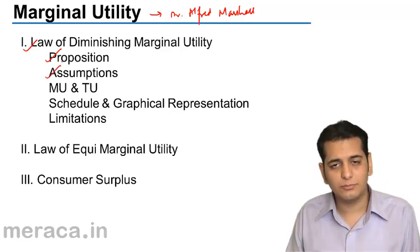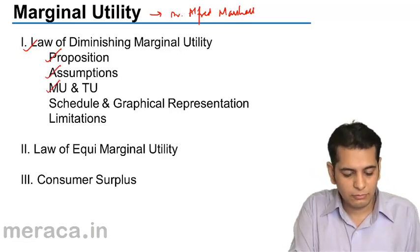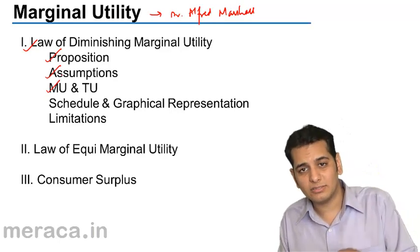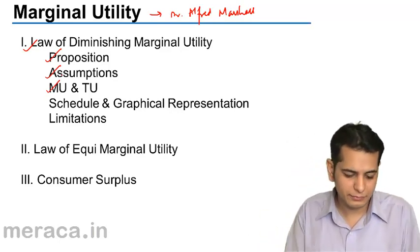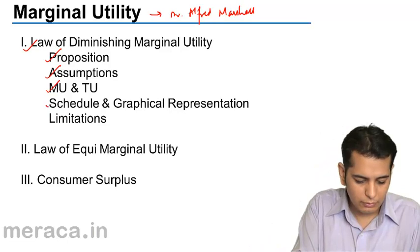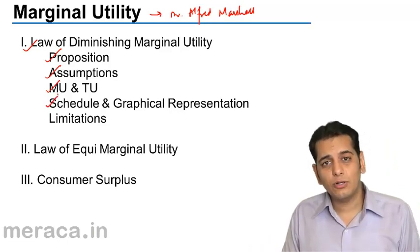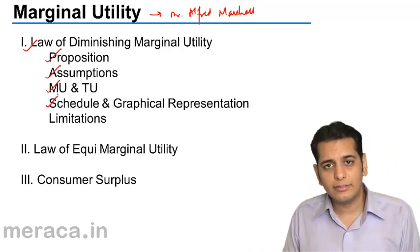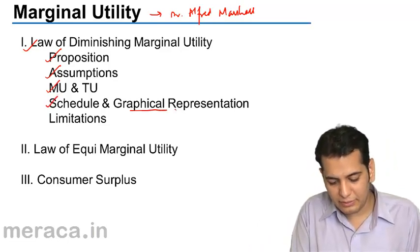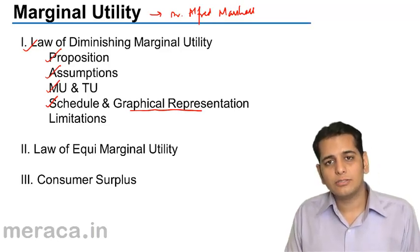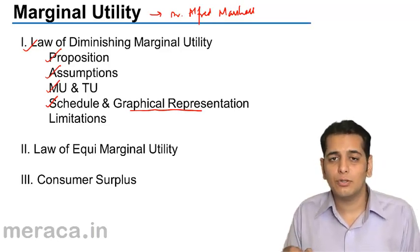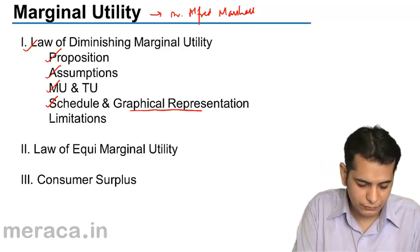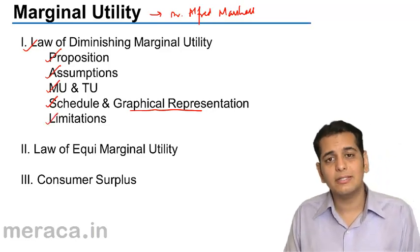Then we will be doing assumptions on it. We will be seeing what is marginal utility and what is total utility. We will give a schedule on it and then try to graphically understand how marginal utility and total utility look on a graph. And finally, we will do the limitations of the law.